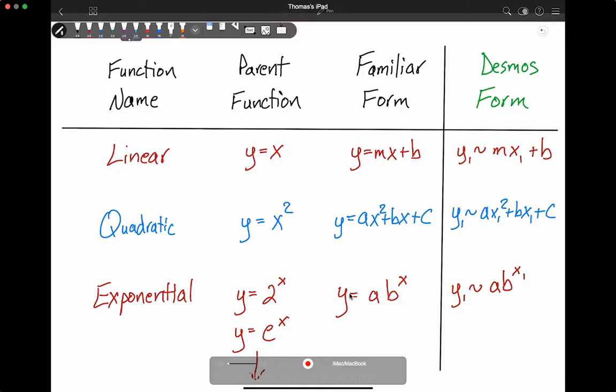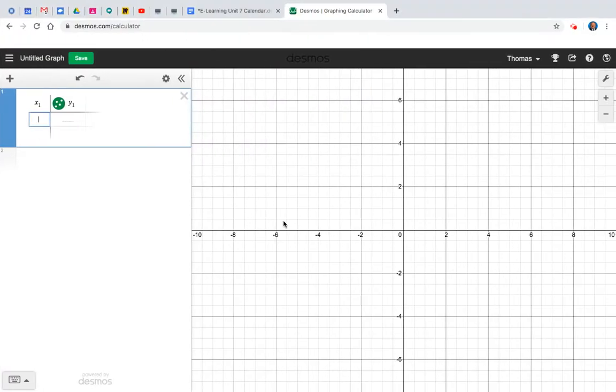The familiar form is y equals a times b to the power of x. So when we transfer that familiar form into Desmos, it's going to be y subscript 1 is tilded with a times b to the power of x sub 1. Those x and y variables are needing that subscript of 1 because you're getting it from this table.